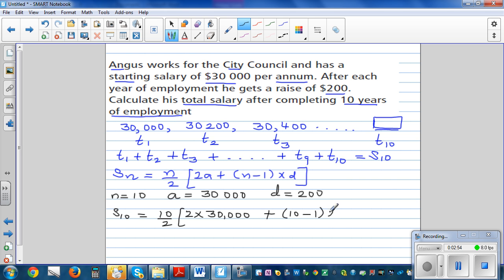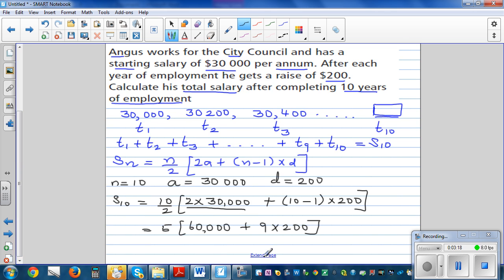So let's simplify this a little. So 10 divided by 2 is 5, bracket, 2 times 30,000 is 60,000 plus 9 times 200.